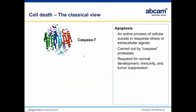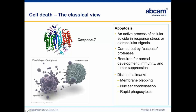On the other side of the coin, we have apoptosis. This is a programmed process — a form of cellular suicide defined by the activation of caspase proteases. The caspases are a family of proteases, protein-cutting enzymes; they are cysteine proteases that cut their substrate at aspartic acid. Apoptosis is required for normal development, immunity, and tumor suppression. Several billion cells die in our bodies by apoptosis every day.